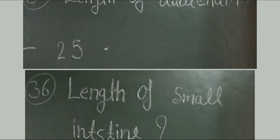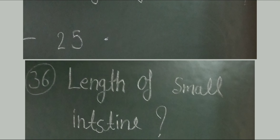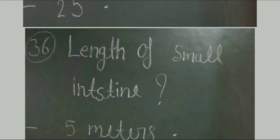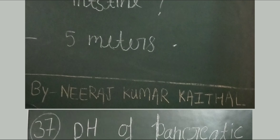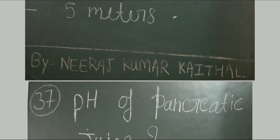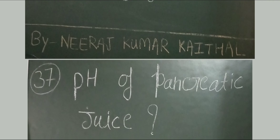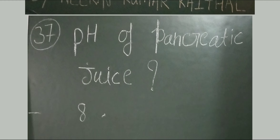Question number 36: length of small intestine — approximately 5 meters. Question number 37: what is the normal pH of pancreatic juice? The answer is 8.